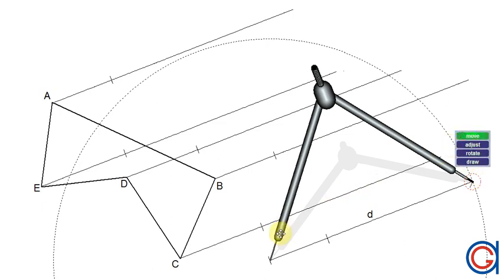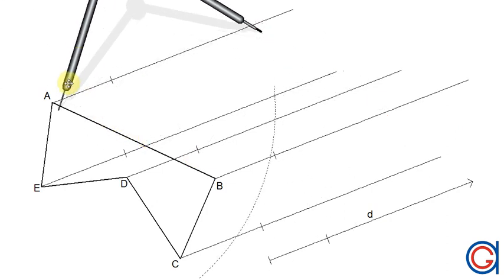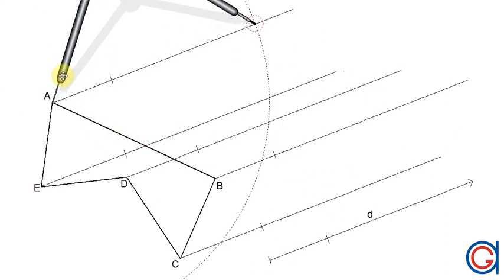So now we're going to transport the given vector d onto the parallel construction line A. So setting our compass on vertex A we scribe an arc. And where this intersects this will be our A prime.